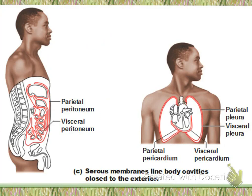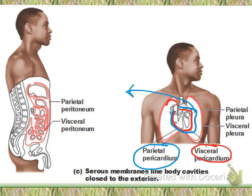When we talk about the heart, we call it the pericardium. The inner covering of the heart is the visceral pericardium, and the outer covering is the parietal pericardium. The space between those two layers is called the pericardial cavity.